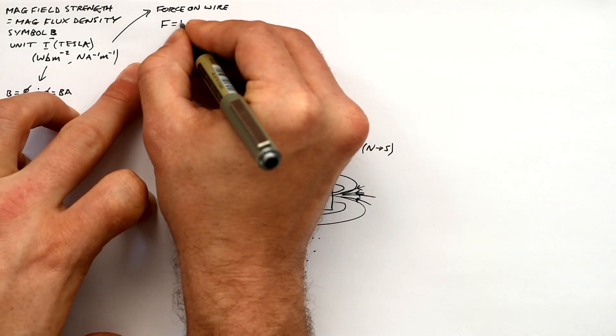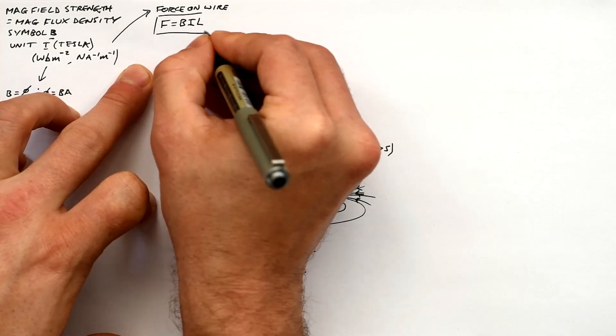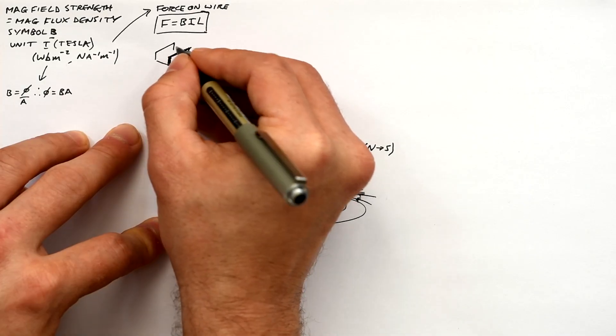Even at GCSE you now need to know the equation for force on a wire carrying a current in a magnetic field, that is if they're all perpendicular. It's F equals BIL, F-bill.